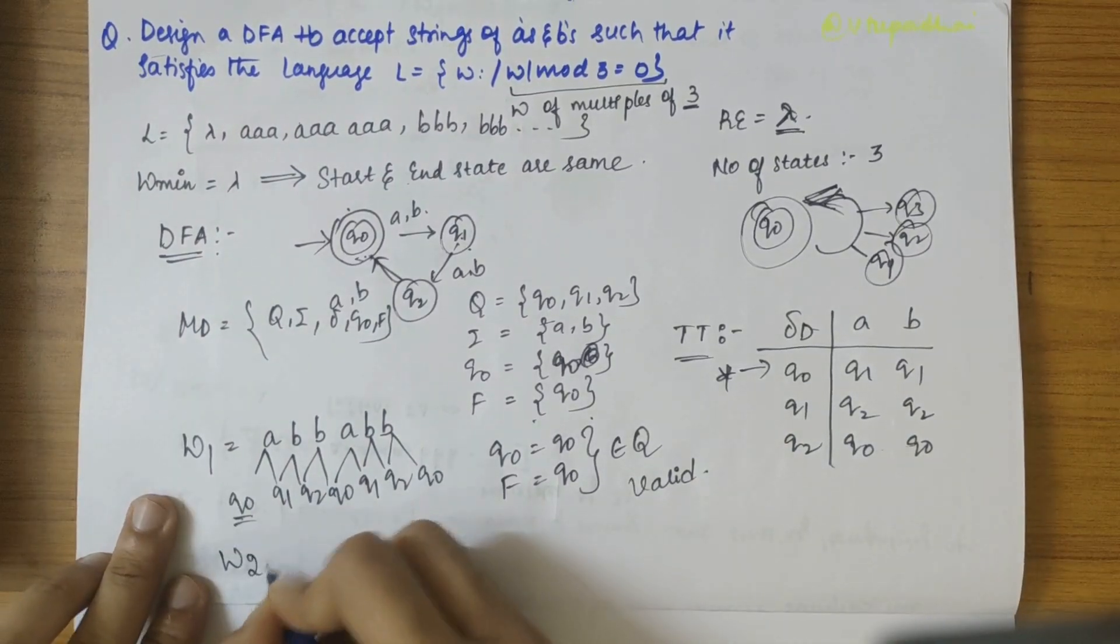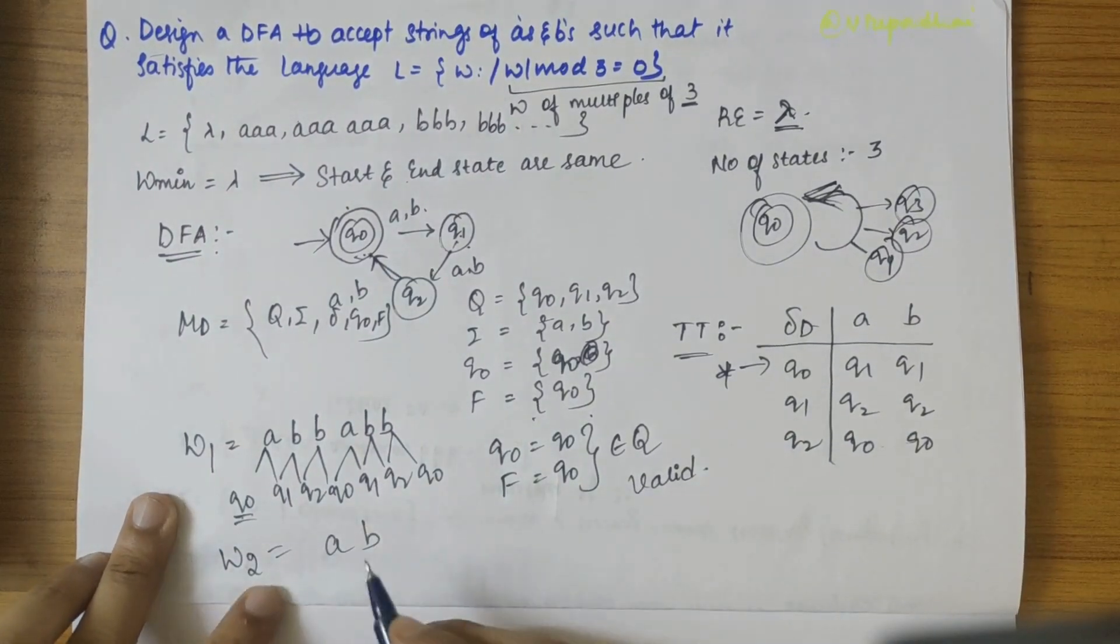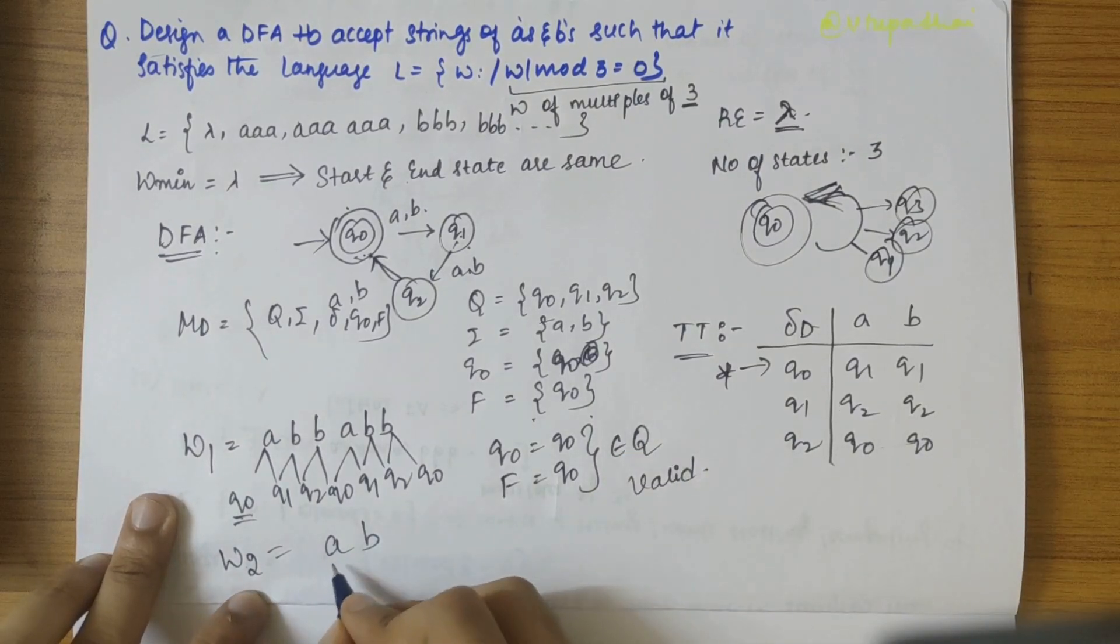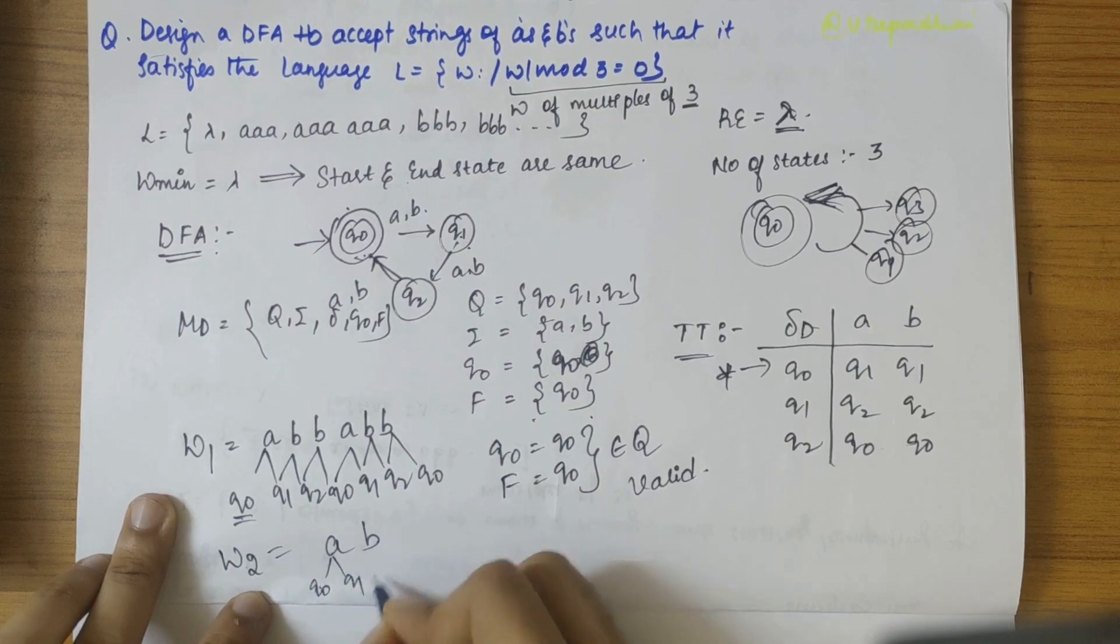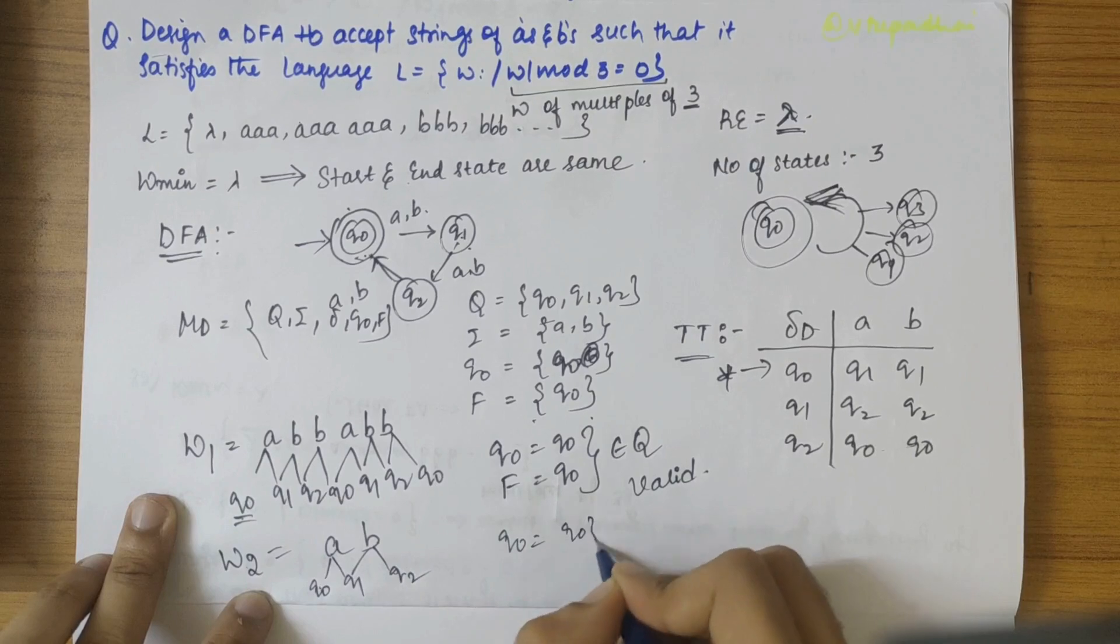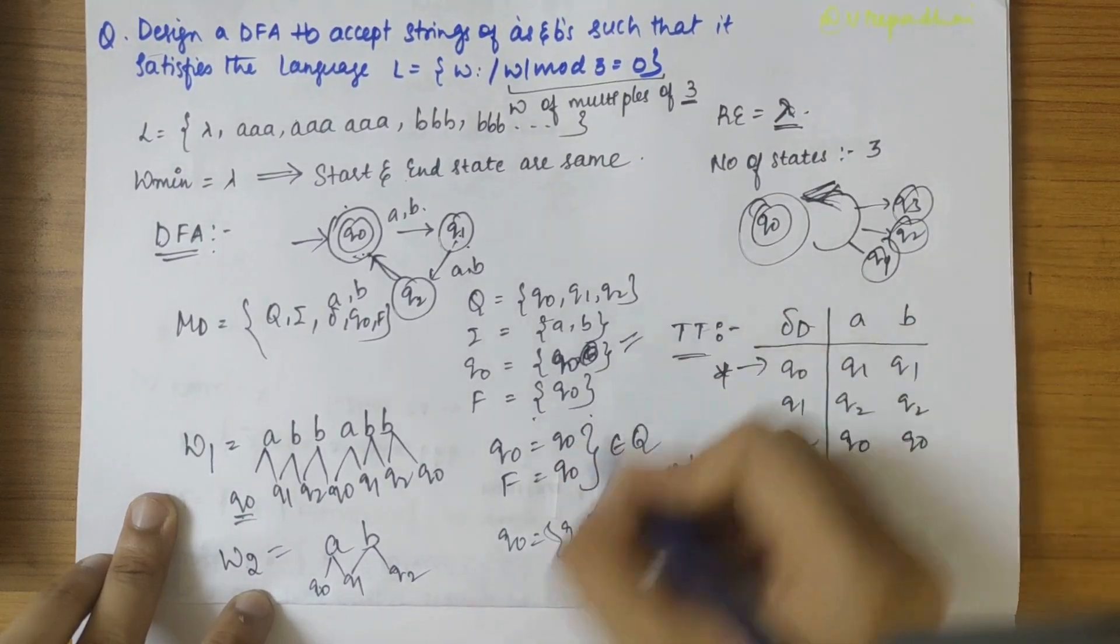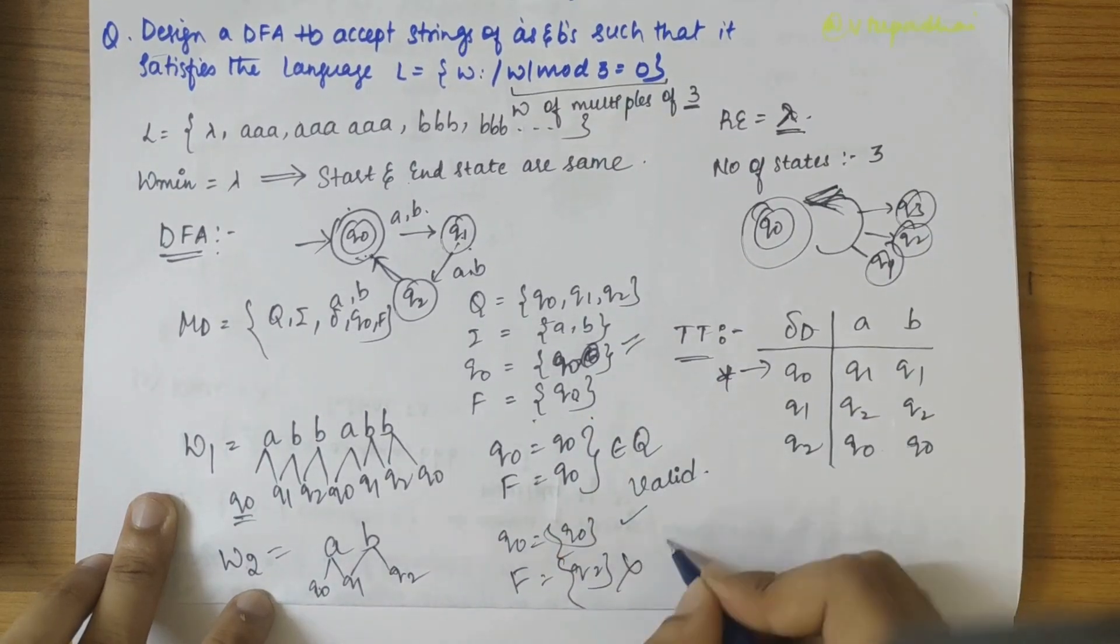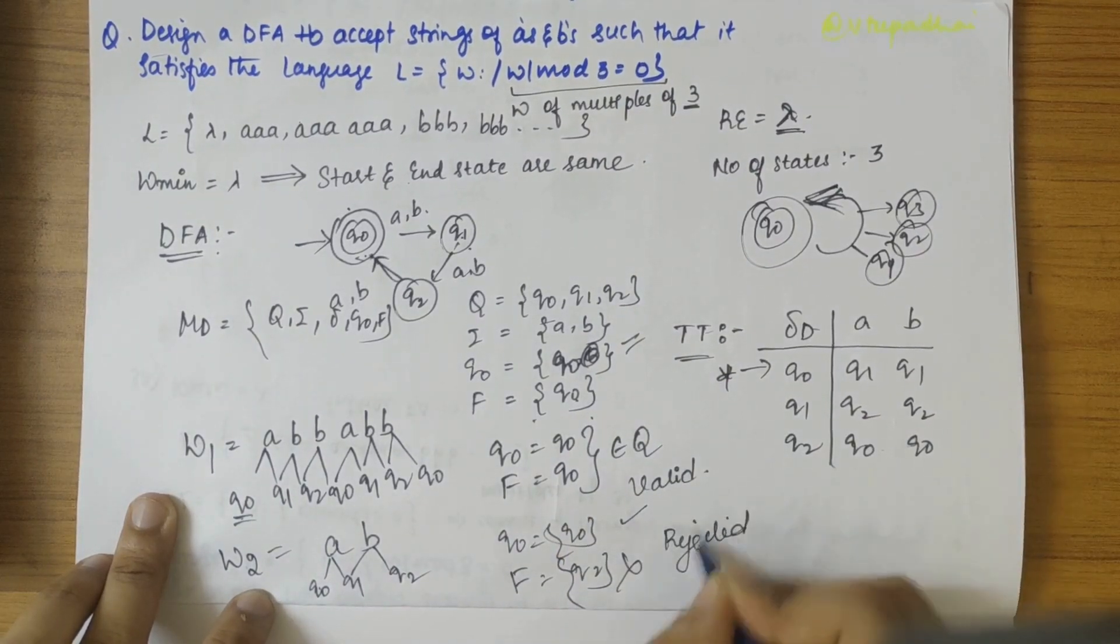But whereas, let's take A, B itself. So is A, B multiple of three? No, it is not multiple of three. So let's solve this. Q0 on A gives Q1 and Q1 on B gives Q2. So Q0 is Q0, fine, accepted as defined here, but the final state is not Q0 here. So this is rejected.